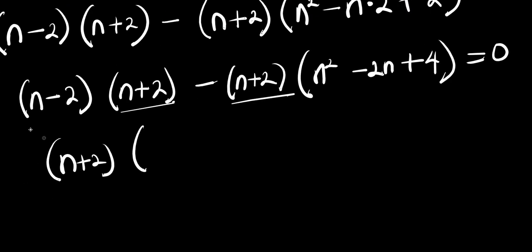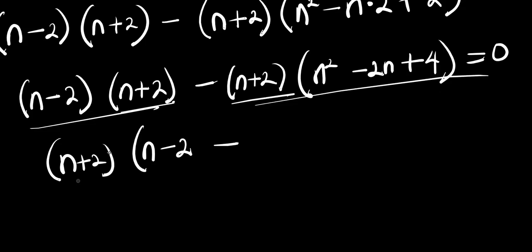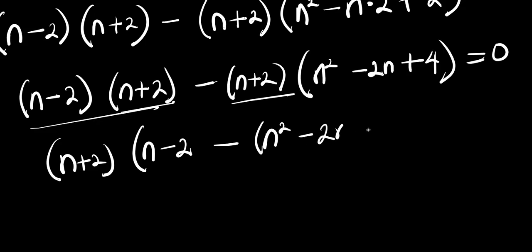If I divide by (n + 2), I will have (n - 2), and there is a minus; dividing the second term by (n + 2), I will have n² - 2n + 4, and this equals 0.